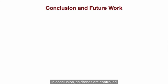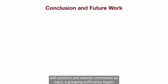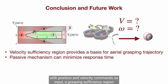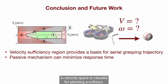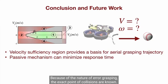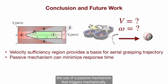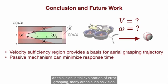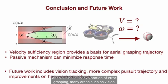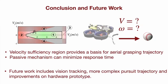In conclusion, as drones are controlled with position, transition and velocity commands as input, a grasping sufficiency region in velocity space is valuable for planning a collision. Because of the nature of aerial grasping, the exact point of collision is unknown. The response time can be minimized through the use of a passive mechanism that triggers mechanically. As this is an initial exploration of aerial grasping, many areas such as vision tracking and more complex pursuit trajectory warrant further investigation. Thank you.